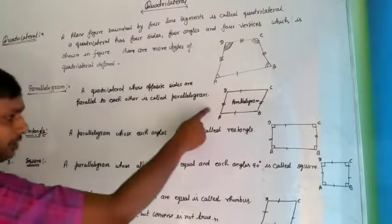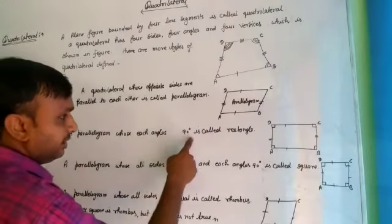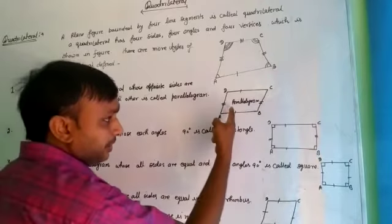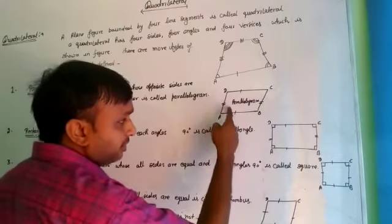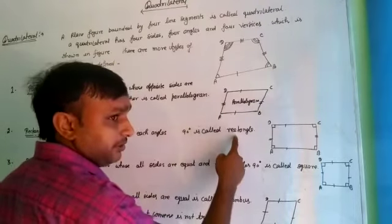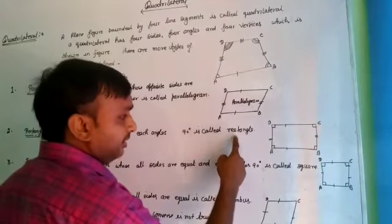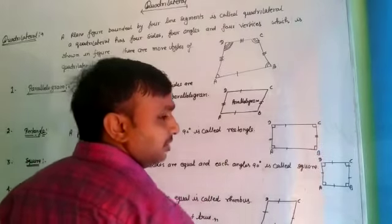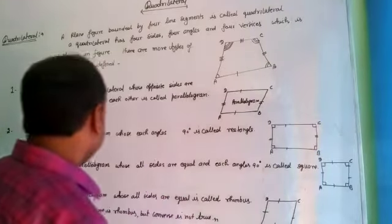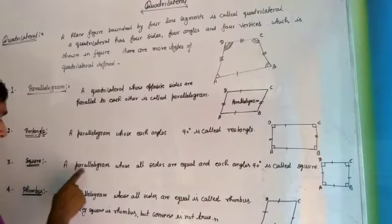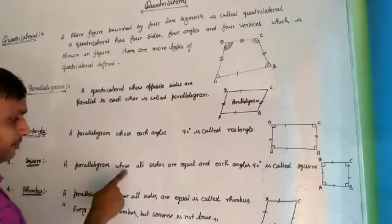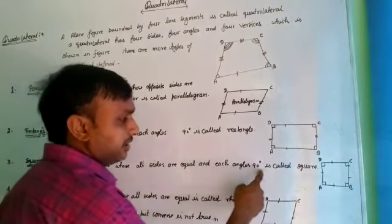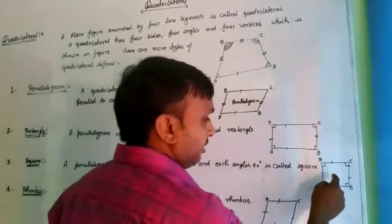A parallelogram whose each angle is 90 degrees is called a rectangle. That is this type of quadrilateral is called rectangle. Next is square. A parallelogram whose all sides are equal and each angle is 90 degrees is called a square.